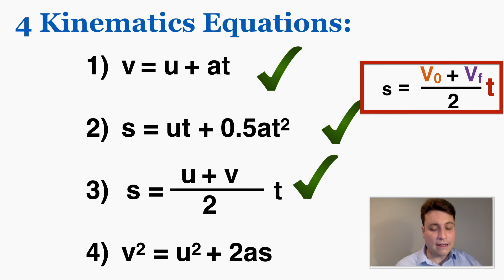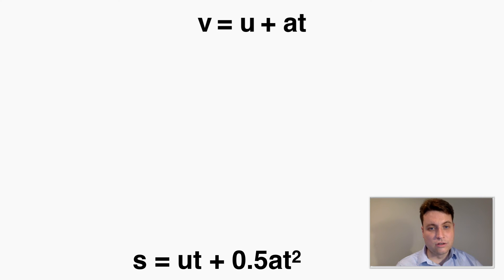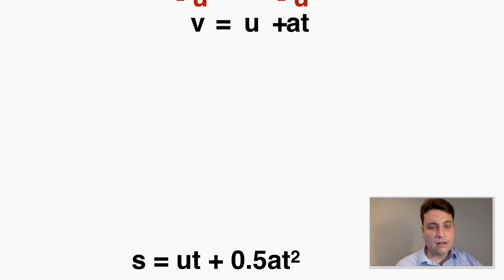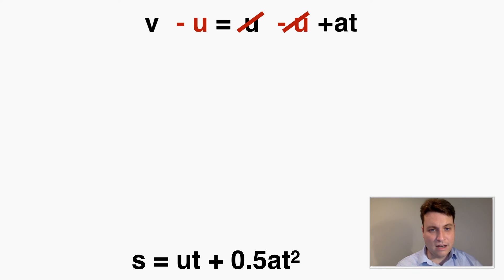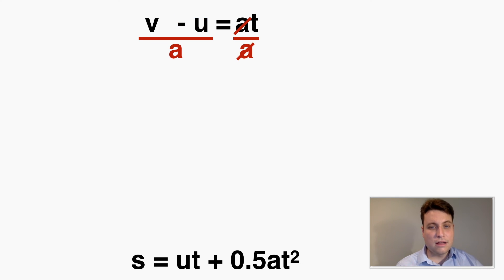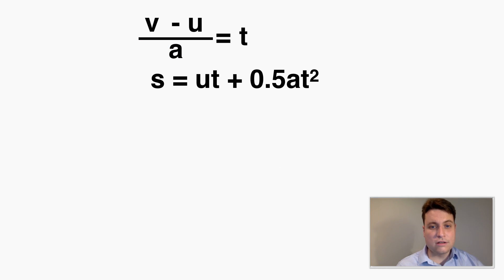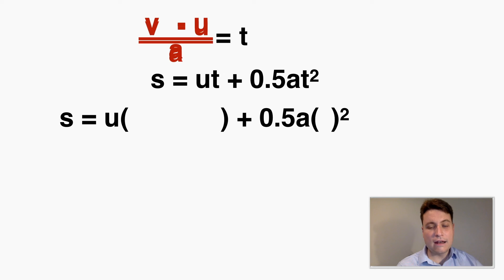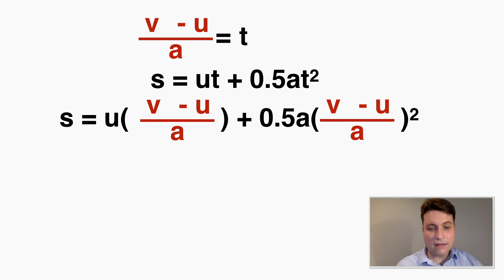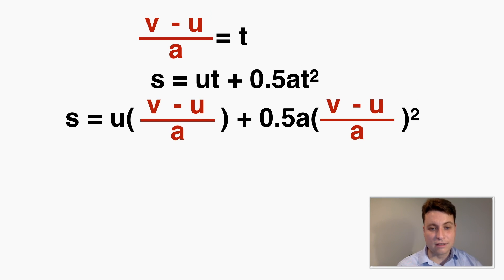The fourth equation can't be proved with geometry, but it can be derived from the two equations we already have. Subtracting u from both sides of equation one gives v minus u equals at. Dividing by a gives t equals (v minus u) over a. I then replace all the t's in the second equation with this expression and carry out the algebra.